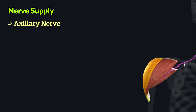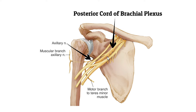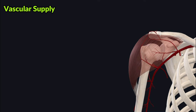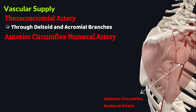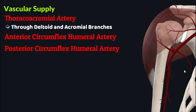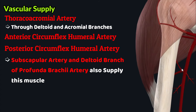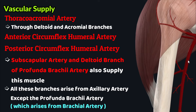The deltoid is supplied by the axillary nerve, which arises from the posterior cord of the brachial plexus with C5 and C6 cervical nerve roots. For vascular supply, it is supplied by the thoracoacromial artery via its deltoid and acromial branches, the anterior and posterior circumflex humeral arteries, the subscapular artery, and the deltoid branch of the profunda brachii artery. All branches except the profunda brachii arise from the axillary artery; the profunda brachii arises from the brachial artery.